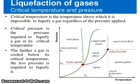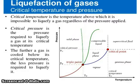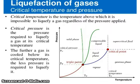Critical temperature and pressure: critical temperature is the temperature above which it is impossible to liquefy a gas, regardless of the pressure applied. Critical pressure is the pressure required to liquefy a gas at its critical temperature. The further a gas is cooled below its critical temperature, the less pressure is required to liquefy it.